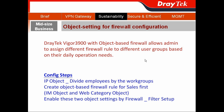The JTAG Vigor3900 also implemented the object-based firewall. This feature can allow network administrators to assign different firewall rules to different user groups based on their daily operation needs.